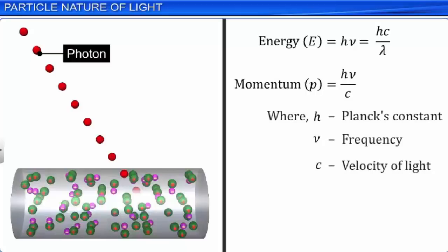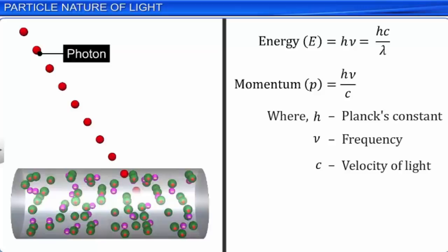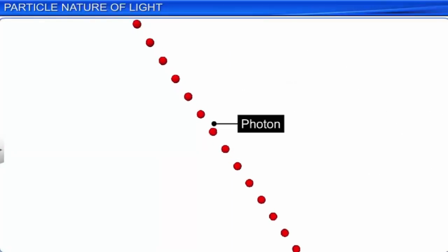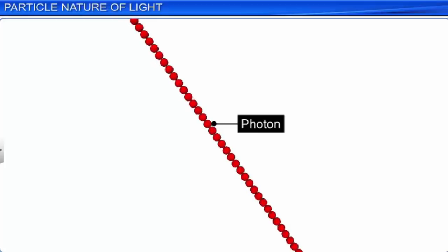All photons travel with the same speed of 3 × 10⁸ meter per second through vacuum, irrespective of their frequencies. All photons of light of a particular frequency ν or wavelength λ have the same energy and momentum, irrespective of the intensity of radiation. An increase in intensity of radiation of a given wavelength implies an increase in the number of photons crossing per unit area per second, as long as the frequency of radiation is constant. Hence, all the photons of a given frequency still have the same energy and momentum, irrespective of the intensity.